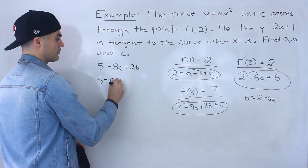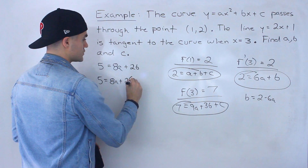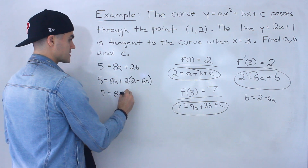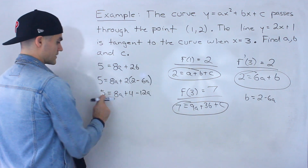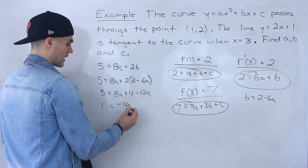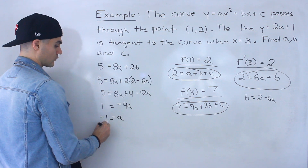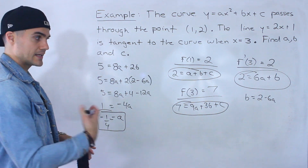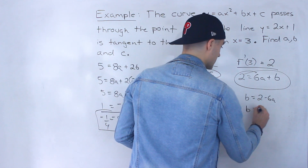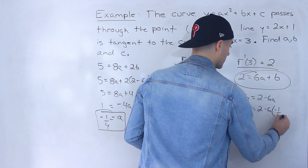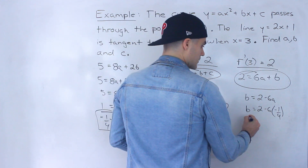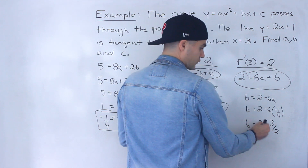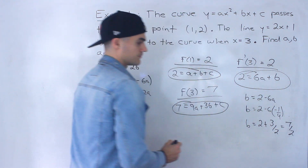Substituting gives us 5 equals 8a plus 2 times (2 minus 6a), which expands to 5 equals 8a plus 4 minus 12a, so 1 equals negative 4a, meaning a equals negative 1 over 4. Plugging that back in: b equals 2 minus 6 times negative 1 over 4, which equals 2 plus 3 over 2, giving b equals 7 over 2.